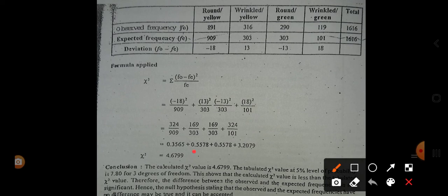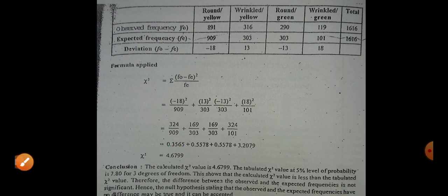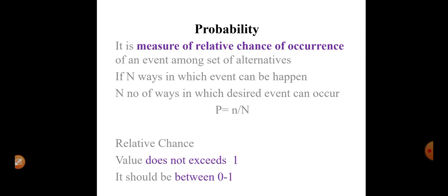The calculated chi-square value of 4.4679 is less than the tabular value of 7.80. Therefore, the difference between the observed and expected frequency is not significant. Hence, the null hypothesis — that observed and expected frequencies have no difference — may be true and is accepted, because the calculated value is less than the tabular value.